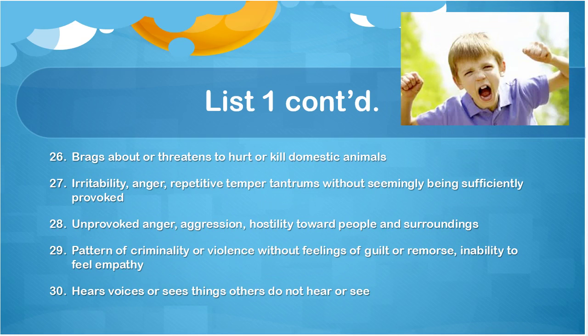Bragging about or threatening to hurt or kill domestic animals — one of the first signs that a child is in deep trouble and can cause serious consequences to others. Irritability. Anger. Repetitive temper tantrums without seemingly being sufficiently provoked. Unprovoked anger, aggression, hostility toward people and surroundings. A pattern of criminality or violence without feelings of guilt or remorse. The inability to feel empathy — that is an important one. Hearing voices or seeing things others do not see or hear.